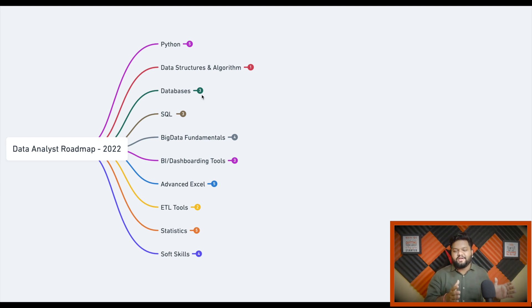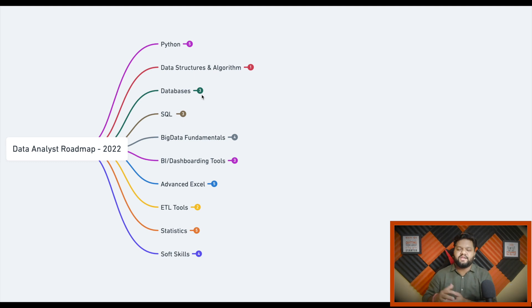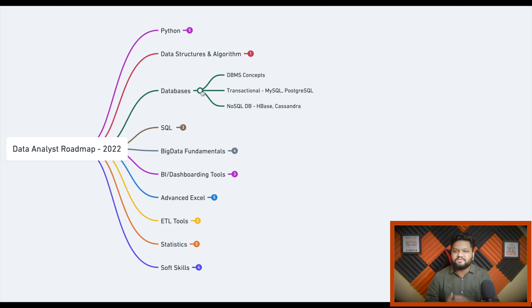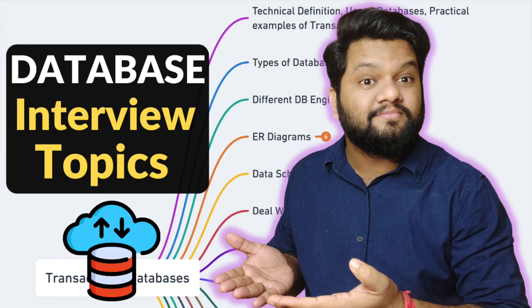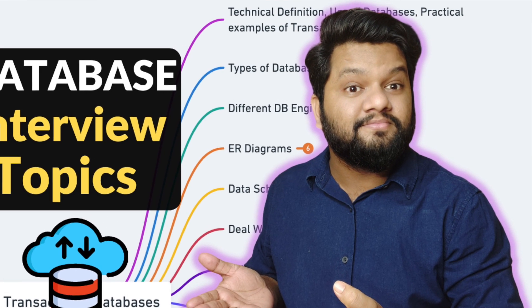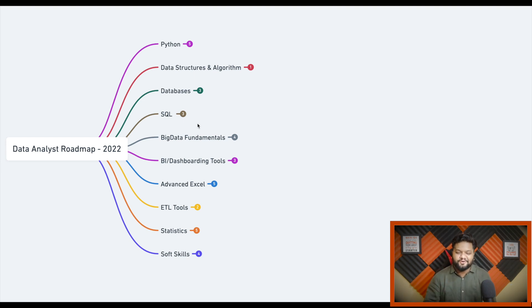The third skill set is databases and DBMS. Transformed data from the engineering team is dumped into SQL, NoSQL, or other databases, and data analysts query this data, represent it, and sometimes create their own tables. You should know core DBMS concepts like table creation, indexing, relationships, ACID properties, normalization, and denormalization. You should also understand transactional databases like MySQL and PostgreSQL, and NoSQL databases like HBase, Cassandra, MongoDB, and Elasticsearch.